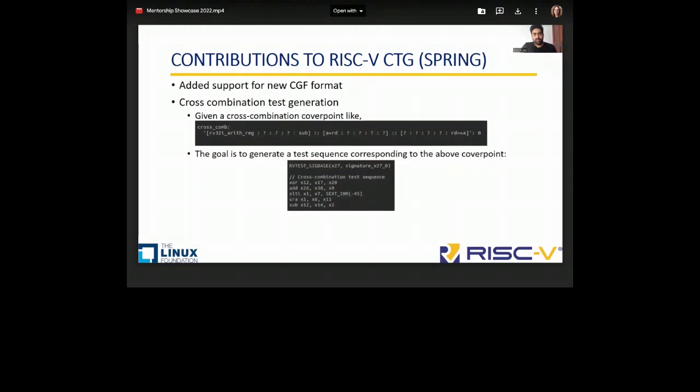CTG can take this blueprint and generate a test. We treat it as a constraint satisfaction problem. These tests are very important as we can generate interesting sequences to test and isolate and detect different hazards that could fall on the device under test. Now I'd like to hand over the presentation to Priyansh Rathi to talk about the fall edition of this mentorship.